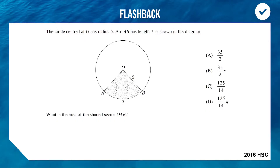Welcome back to McGrath Thematics. We're kicking off with a 2016 HSC question: we've got a circle with a radius of five and an arc length of seven. The question is, which one of these four is the area of the shaded sector? As always, hit pause and see which one you would be choosing.